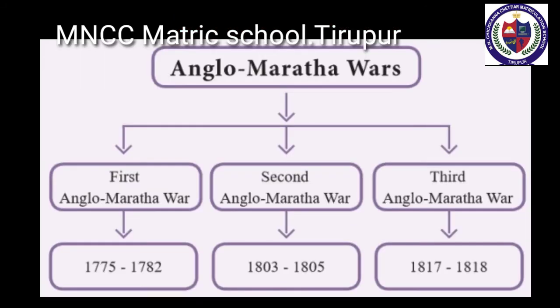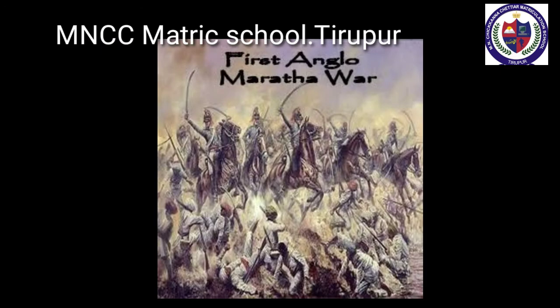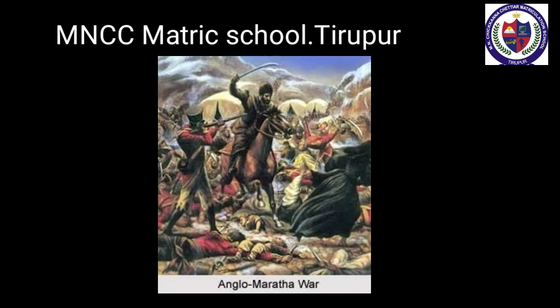Anglo-Maratha Wars: 1st Anglo-Maratha War 1775–1782, 2nd Anglo-Maratha War 1803–1805, and 3rd Anglo-Maratha War 1817–1818. There were five independent states of Marathas: Peshwa at Pune, Gaekwads at Baroda, Bhonsle at Nagpur, Holkars at Indore, and Sindhias at Gwalior. The Peshwa's government was weakened by internal rivalries and the other four leaders were often hostile to each other.